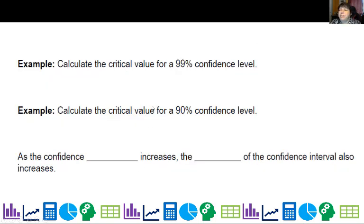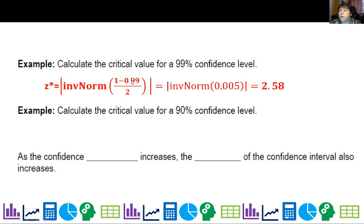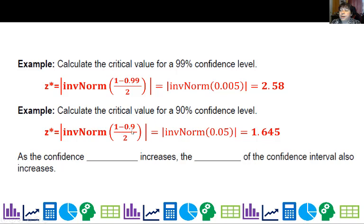So let's go ahead and calculate the critical value for a 99% confidence level. We're going to do 1 minus 0.99 divided by 2. So it's 0.005 or 2.58. For a 90% confidence level, it's 1 minus 0.9 divided by 2. So you have 90% in the middle, 10% left over, 5% on the left, 5% on the right. That's where the 0.05 comes from. And that's 1.645.